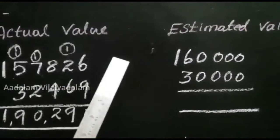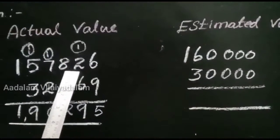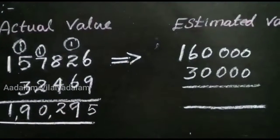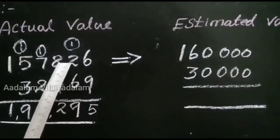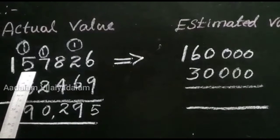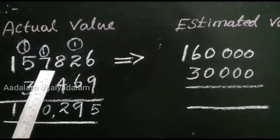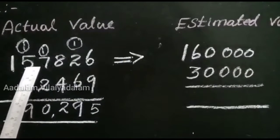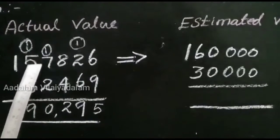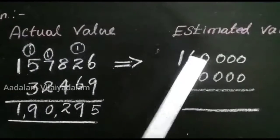Next, we find the estimation value of 1,57,826 to the nearest 10,000 place. Identify the 10,000 place: 1, 10, 100, 1000, 10,000. The next digit is 7, which is greater than 5, so add 1 to the corresponding digit. 5 plus 1 equals 6. So 1,60,000 is the estimation value.